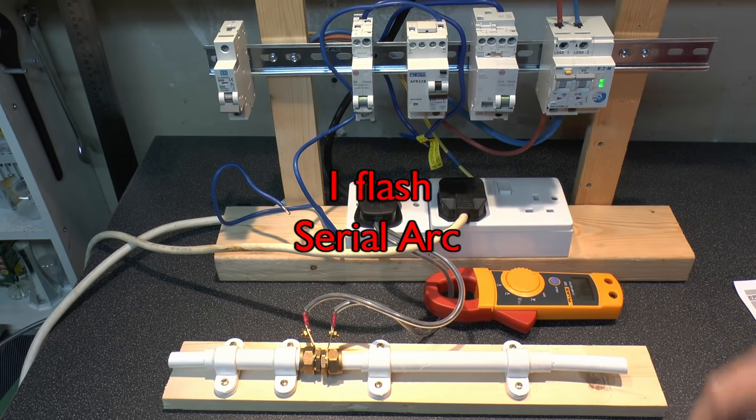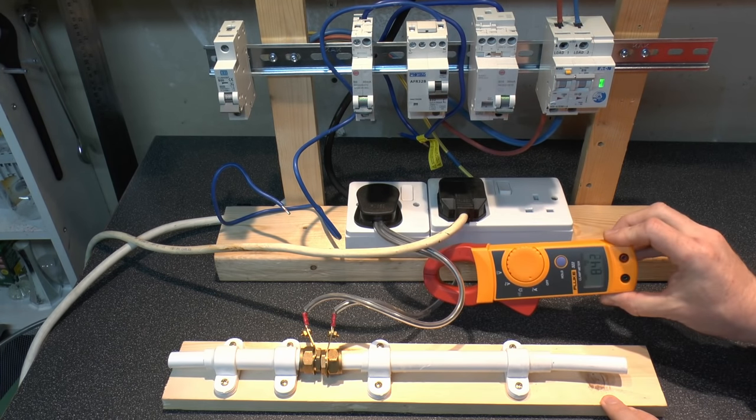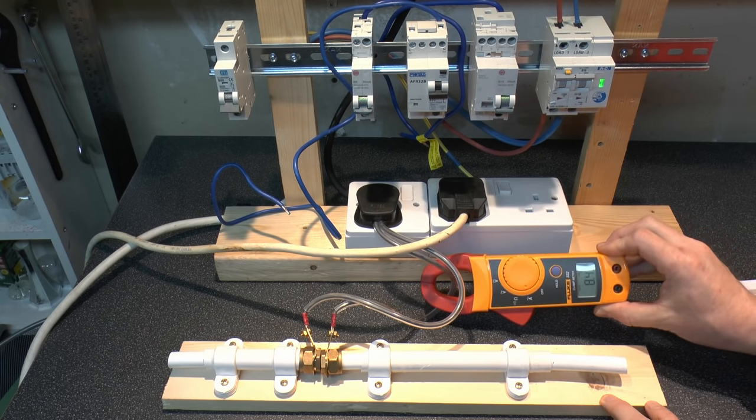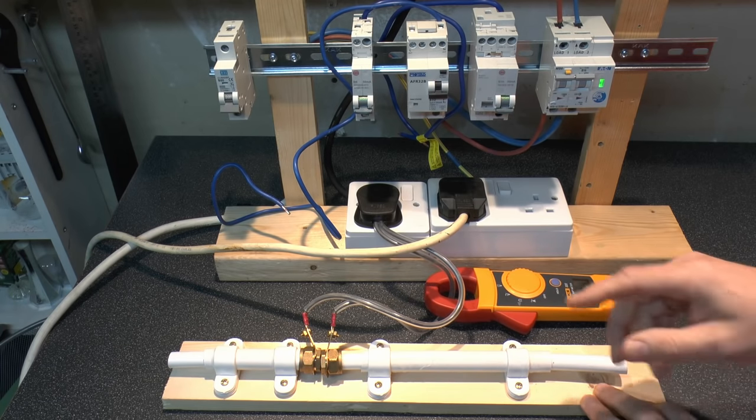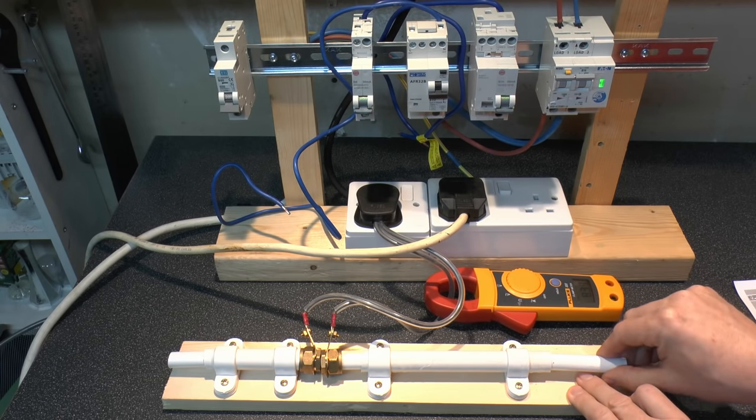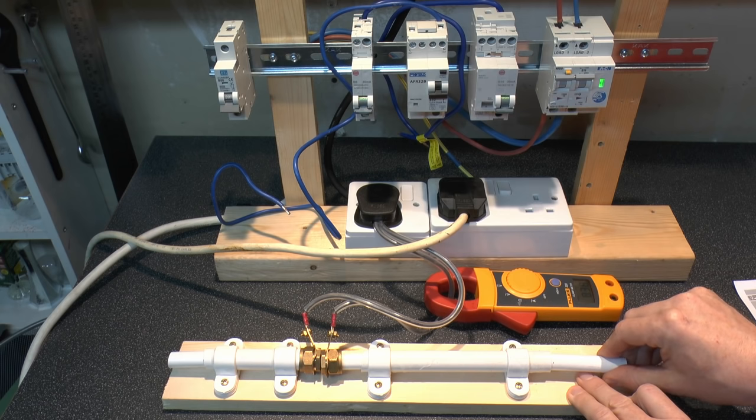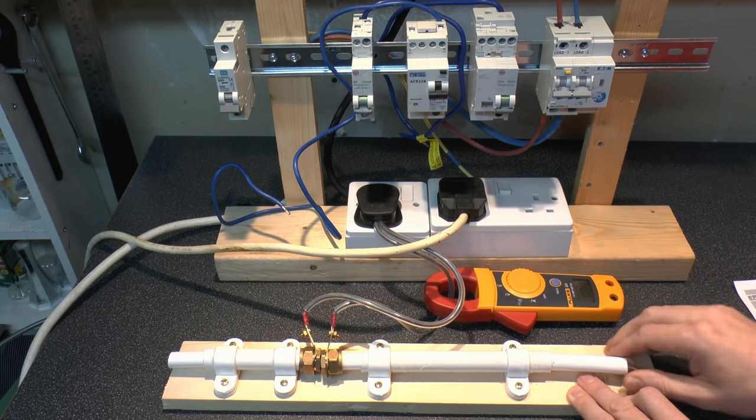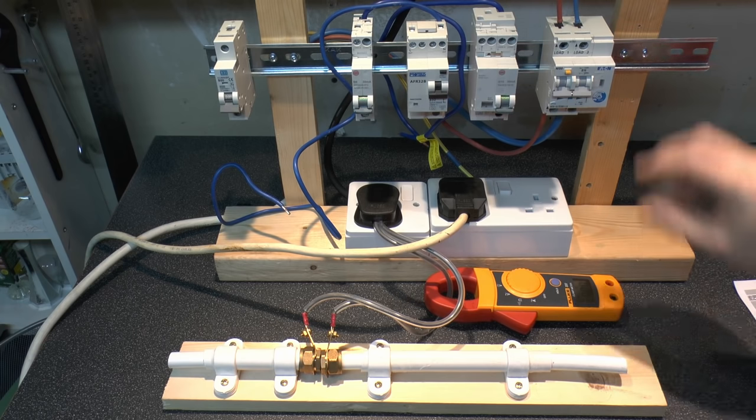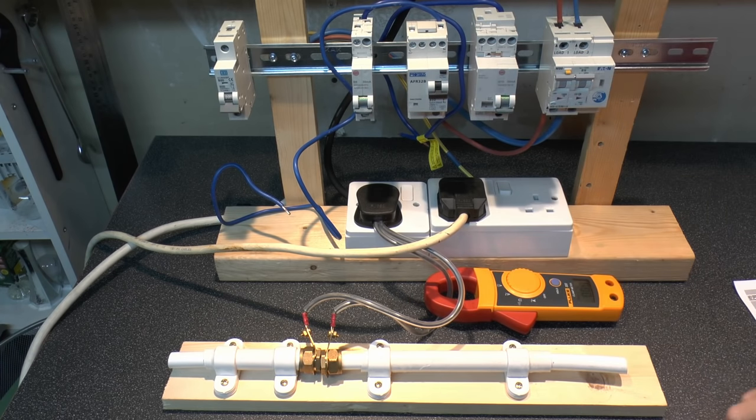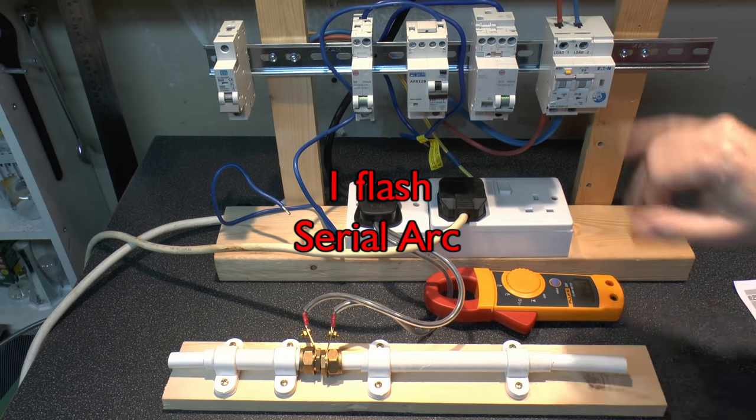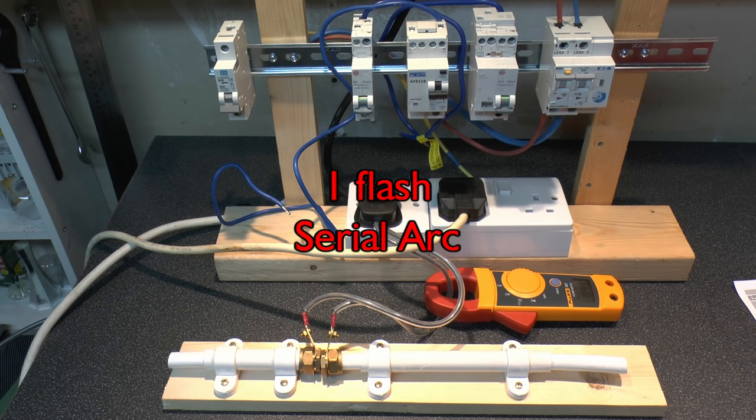So now we've got the heater on its fullest setting and it's about 8.4A there, so considerably more than before. So same again, see if we can get an arc between the contacts. Yep, there it goes. Trips pretty much straight away. And again if we turn it back on, get that single flash there to indicate the trip cause was in fact an arc.